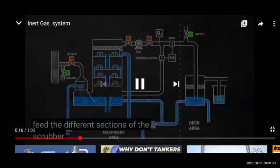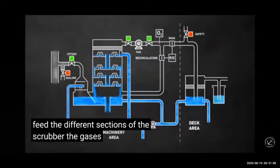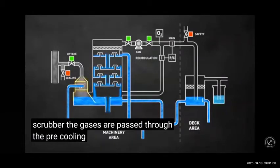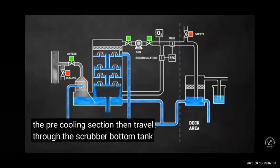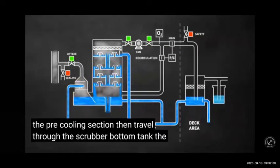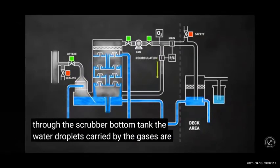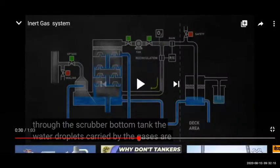The gas is coming from the boiler via the boiler uptake valve, then passing through the scrubber — it gets purified through baffle stones, sprinklers, and demister pad — and going to the fan. After the fan, you can see there is an oxygen analyzer written here. It will check the gas: if it is less than 5%, it can go to the deck seal.